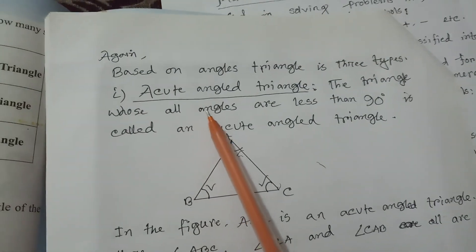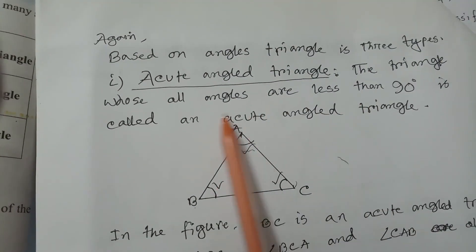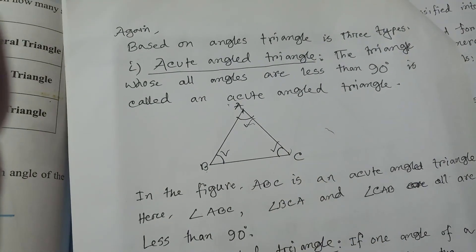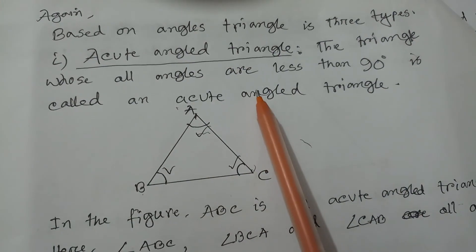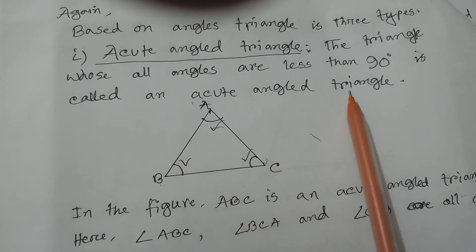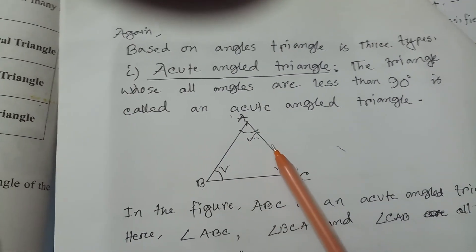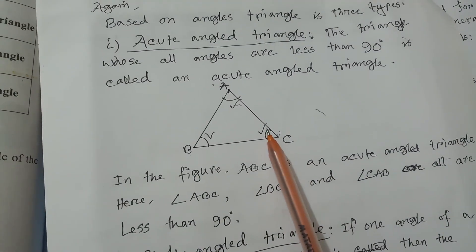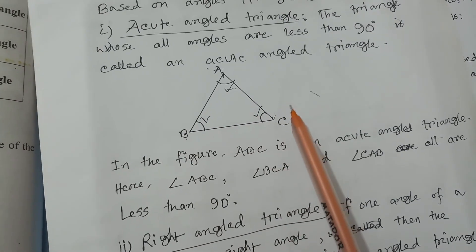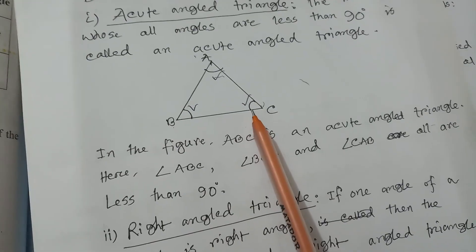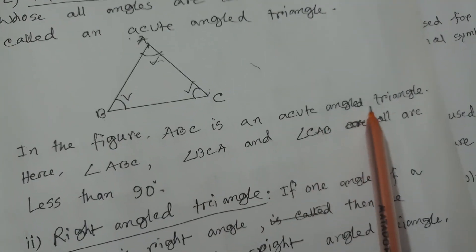Again, based on angles, triangle is three types: number one, acute angle triangle; number two, right angle triangle; and number three, obtuse angle triangle. The triangle whose all angles are less than 90 degrees is called an acute angle triangle. Angles ABC, BCA, and CAB — those three angles are less than 90 degrees. That's why it is called an acute angle triangle. In figure, ABC is an acute angle triangle.